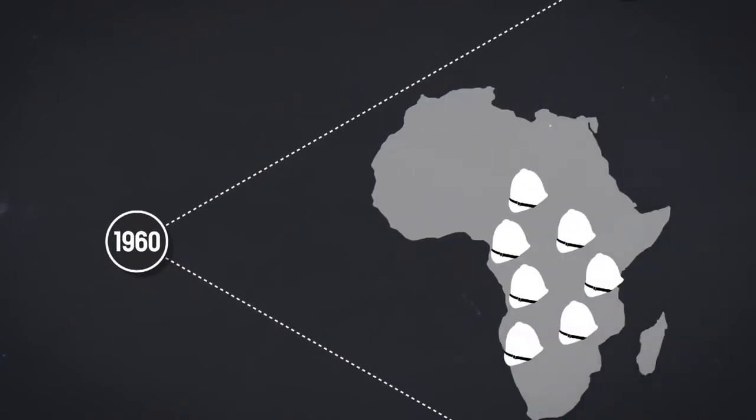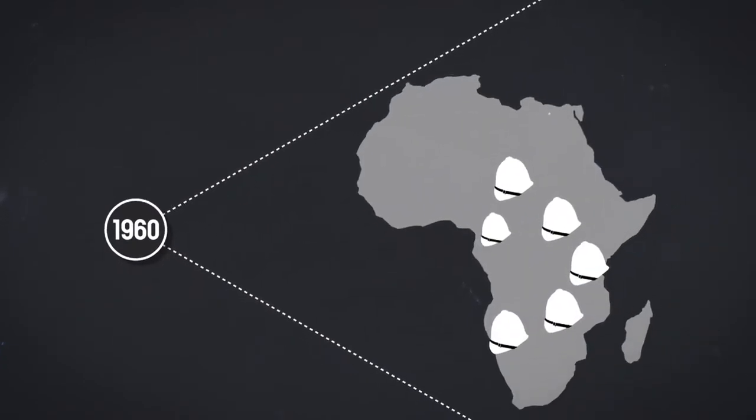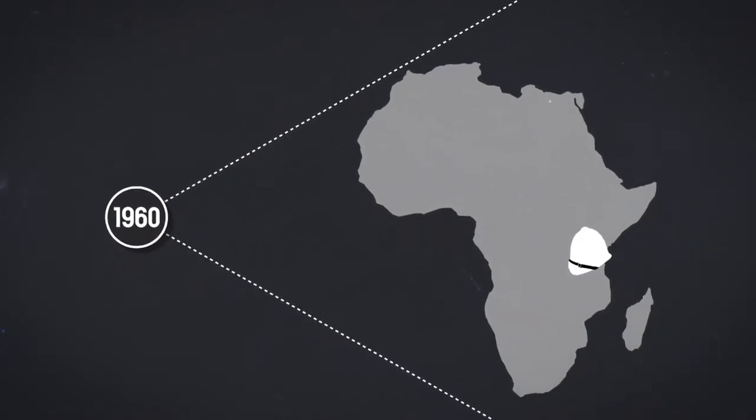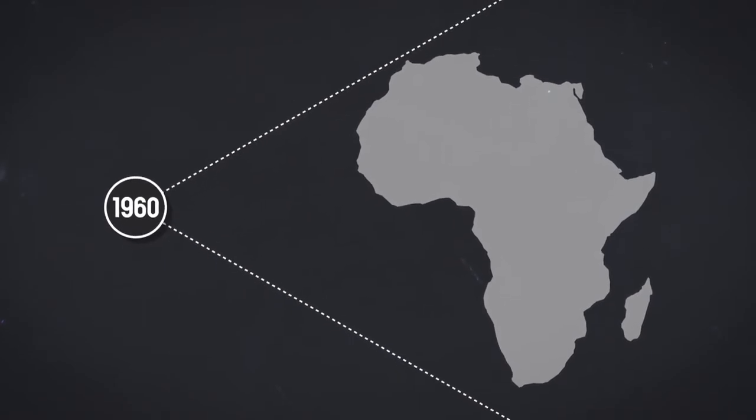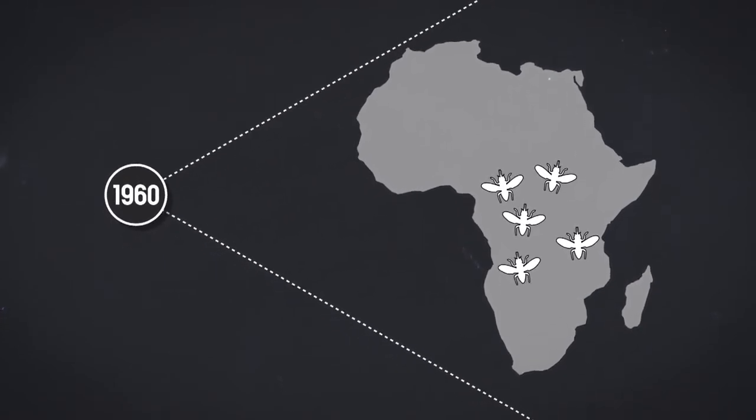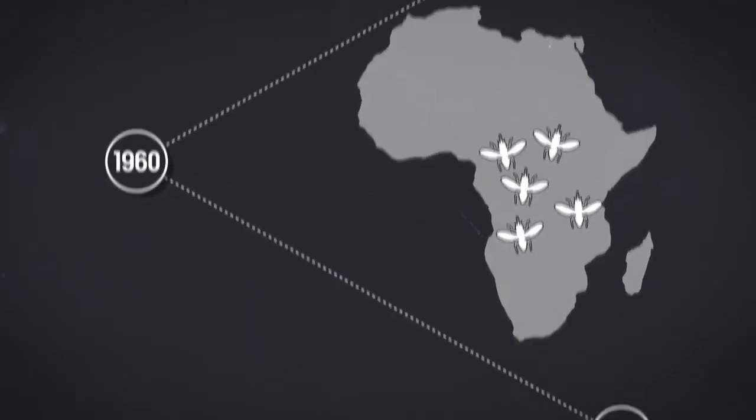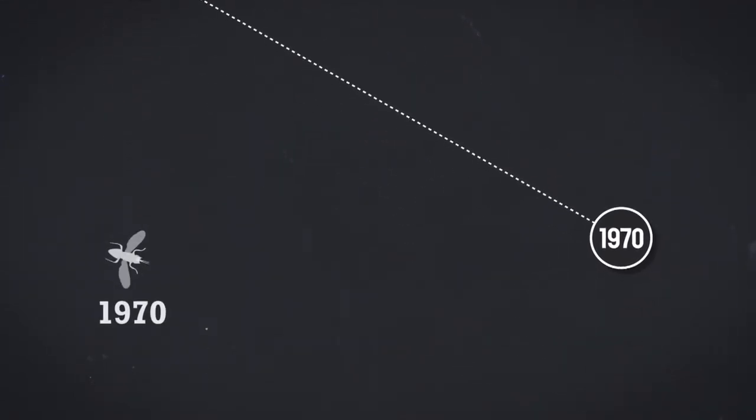In the 1960s, as the colonizers departed from most of the affected countries, interest in the disease declined and the tsetse fly reappeared. An epidemic broke out in 1970 and reached its peak in 1998.